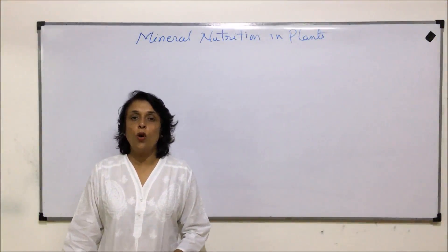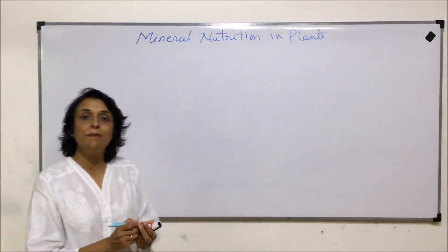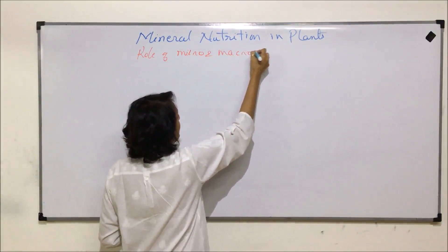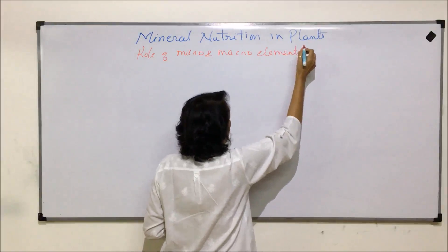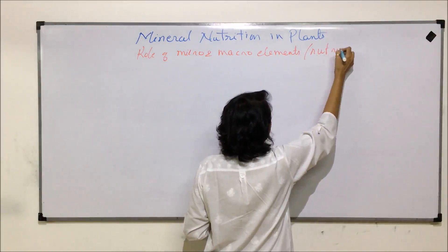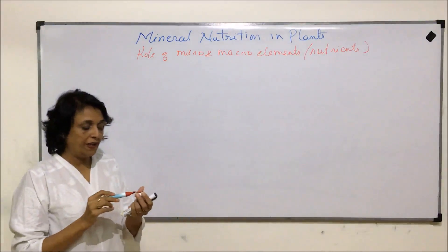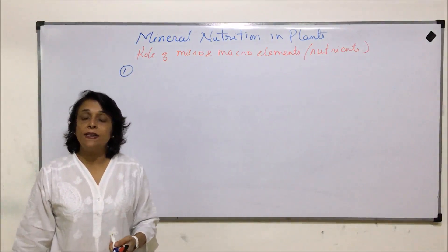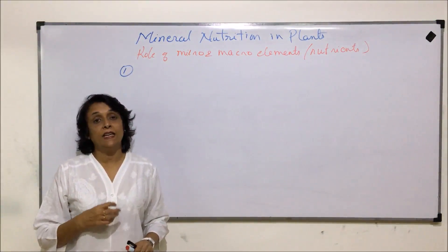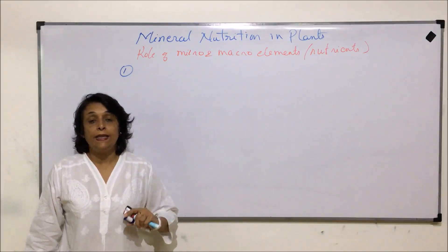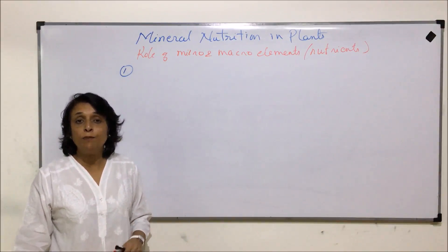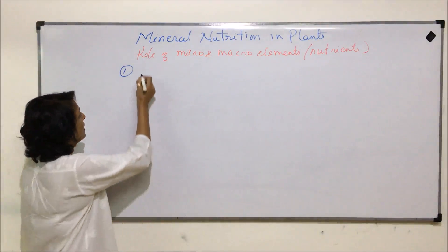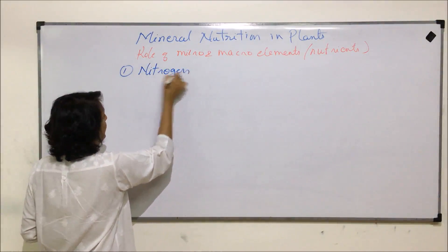We will now discuss the role of all these essential micro and macro nutrients. We will take all of these elements one by one and discuss them under certain heads: in which form they are absorbed by the plant, where they are essential, why they are required, and their deficiency symptoms — that means if these elements are absent or in less amount, what kind of deficiency symptoms are seen in the plant.